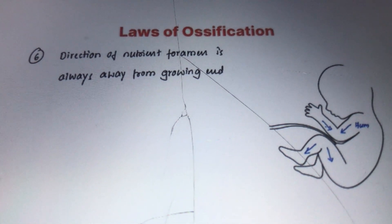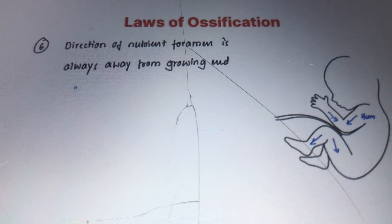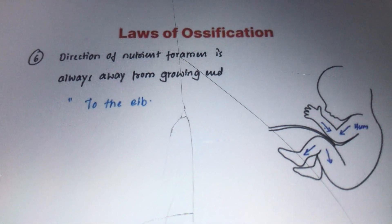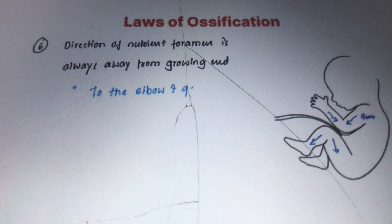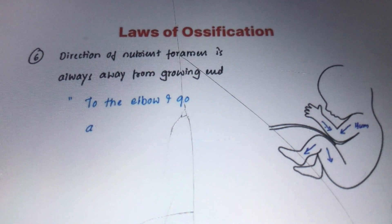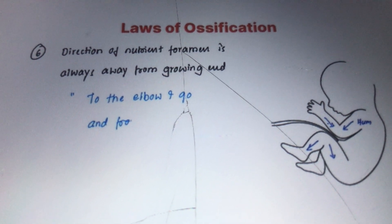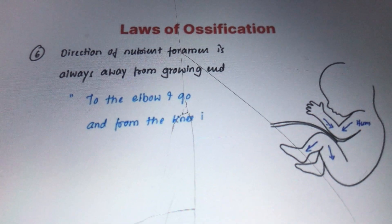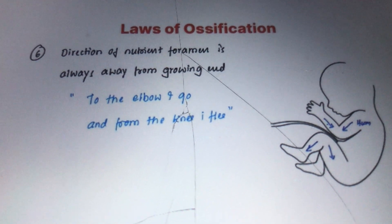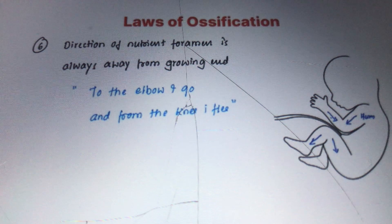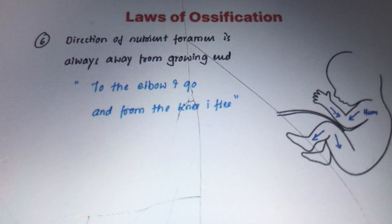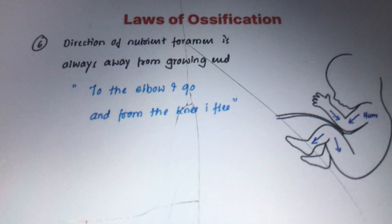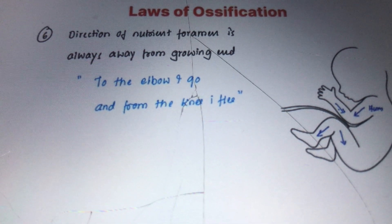This can be remembered by the mnemonic: 'To the elbow I go, and from the knee I flee.' This helps recall the direction of the nutrient foramen and which ends of the limb bones are the growing ends.